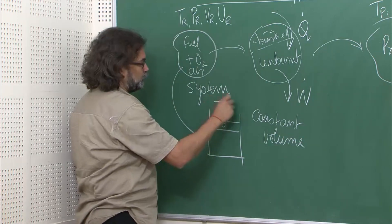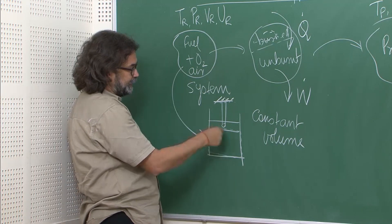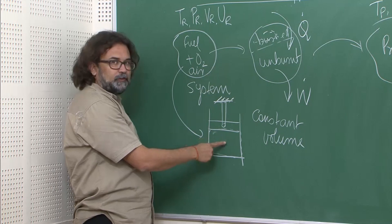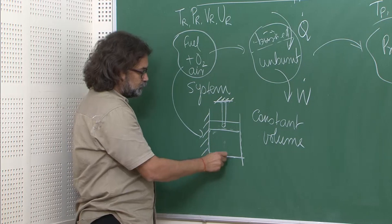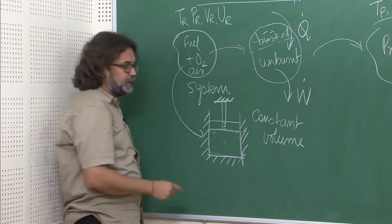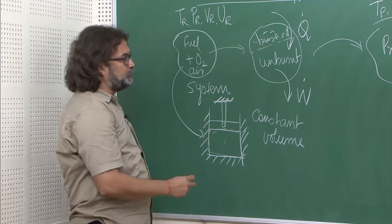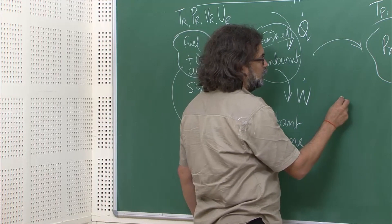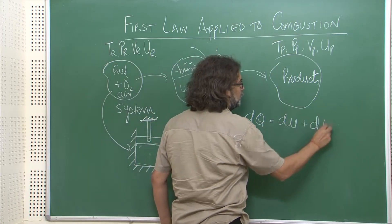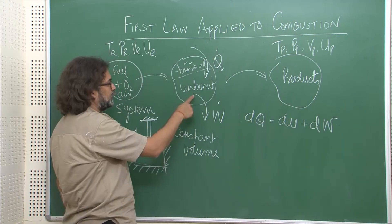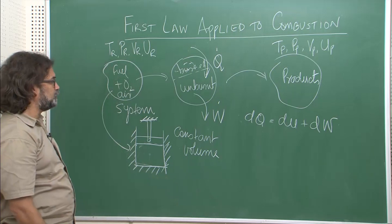That means the piston is not allowed to move upwards — this is our system boundary and the reaction takes place and the heat comes in. We can also insulate the system, which will prevent any heat from going out. Now let us apply the first law: dq = du + dw. Here we follow the sign convention that work done by the system is positive and heat given to the system is positive.